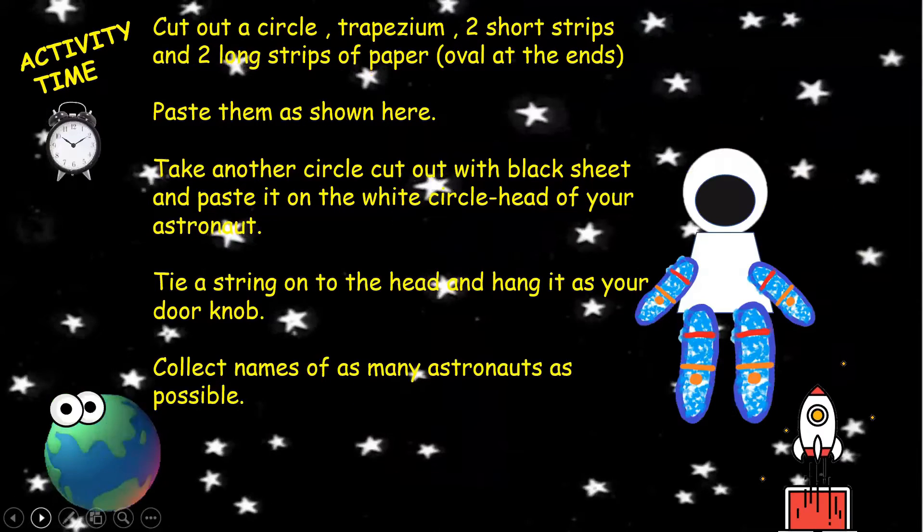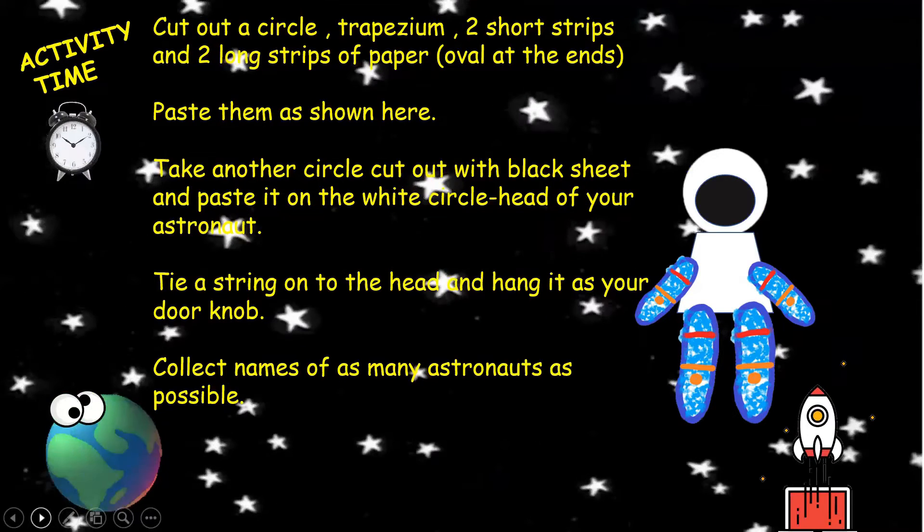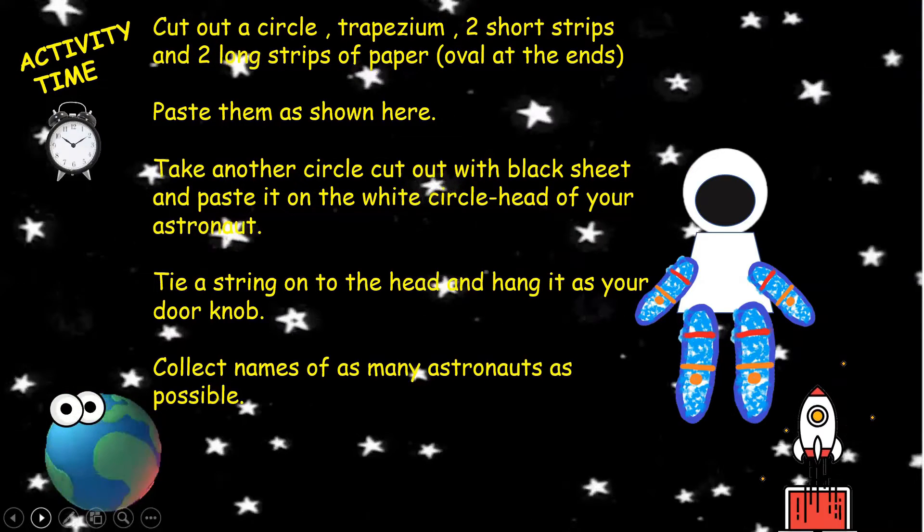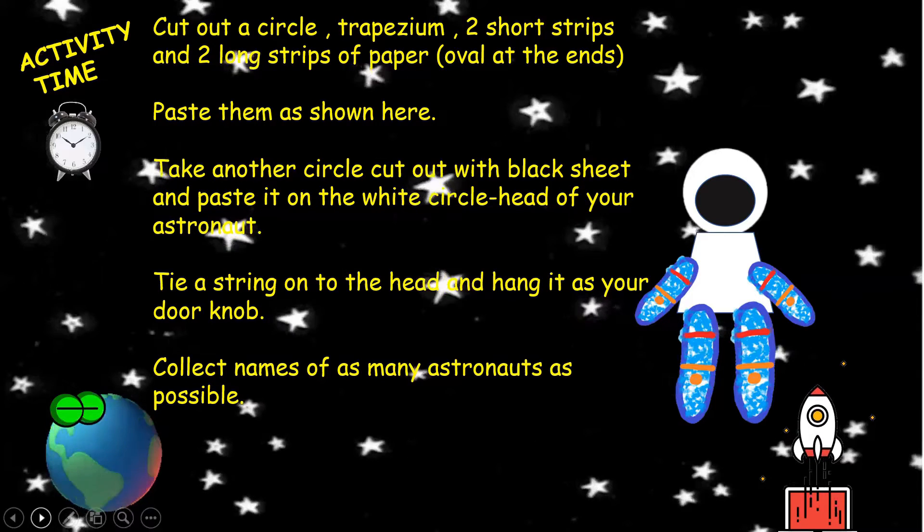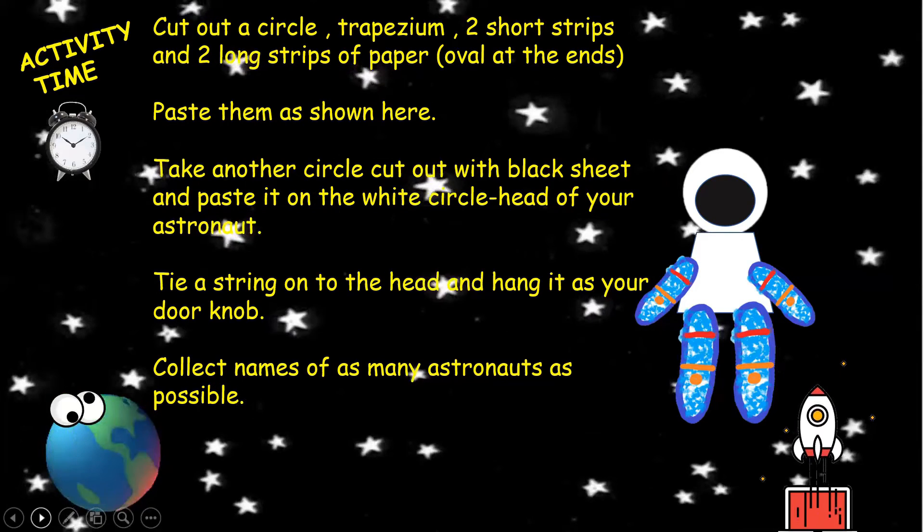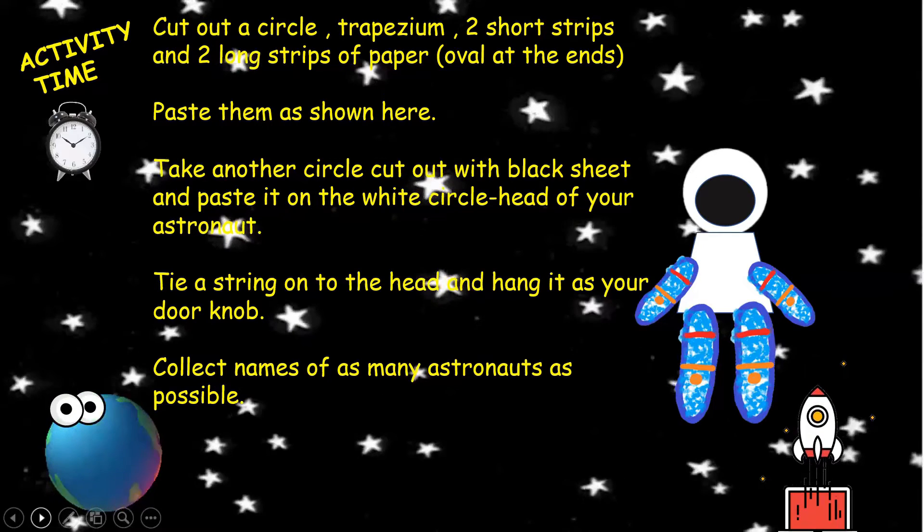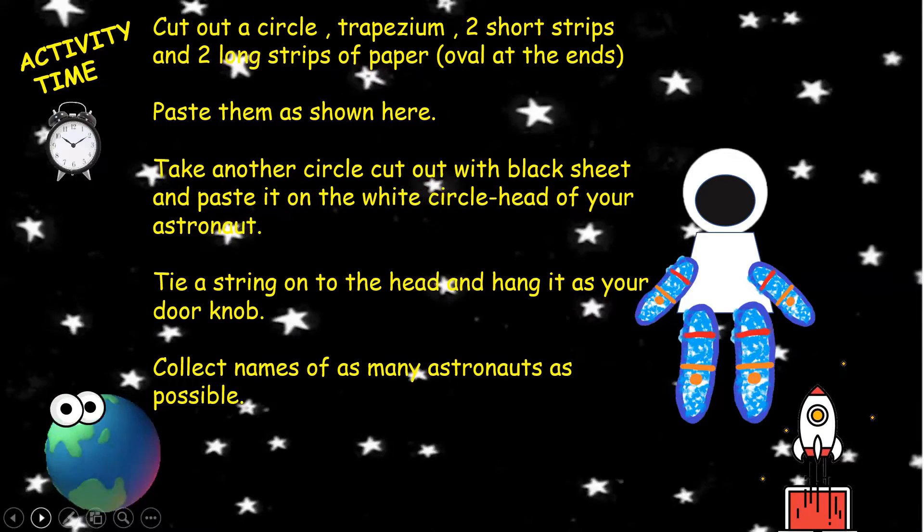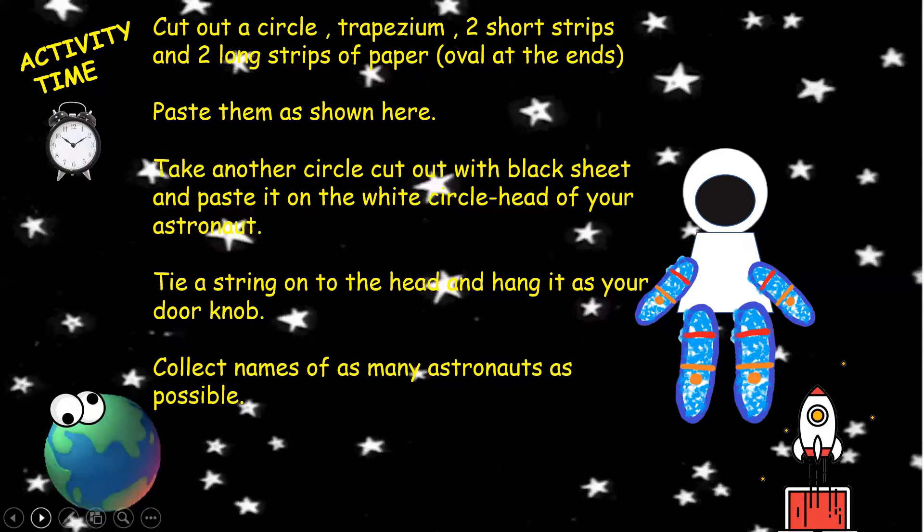And now it's time for some activity. Cut out a circle, a trapezium, two short strips and two long strips of paper as given in the figure. Paste them as shown here. Take another circle cut out with black sheet and paste it on the white circle head of your astronaut. You can tie a string onto the head and hang it as your doorknob. Collect names of as many astronauts as possible.